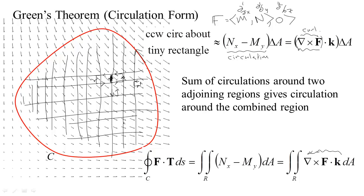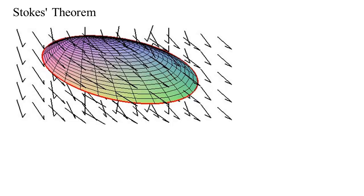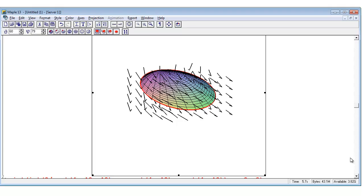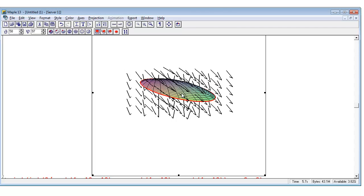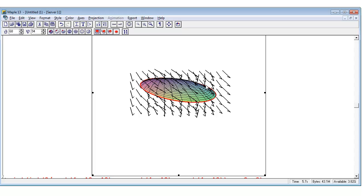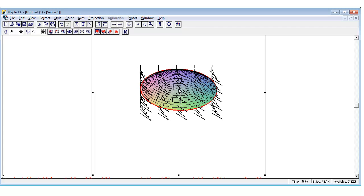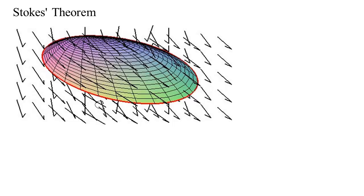Is there such a thing for a surface in three dimensions? We now have a three-dimensional vector field with arrows in space, some surface, and the boundary of that surface is a curve. There is a similar result. The surface lives in three dimensions and the red boundary curve is the boundary of that surface. You can ask about the circulation around this boundary — is there a connection to an integral over the surface? The answer is yes: it's just a more general form of Green's theorem.